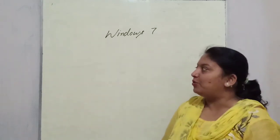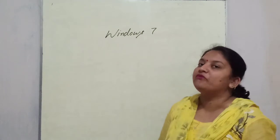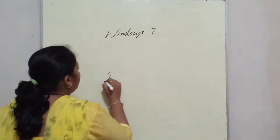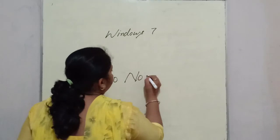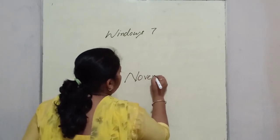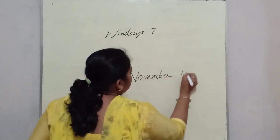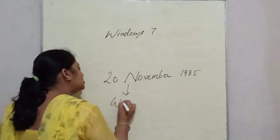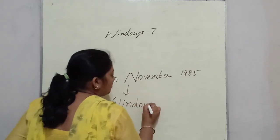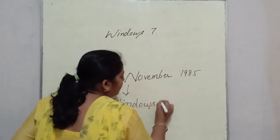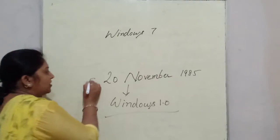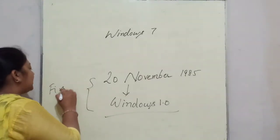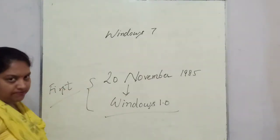Actually, the first version of Windows was released on 20th November 1985, and that was Windows 1.0. That was the first version. But at that time it was not popular.